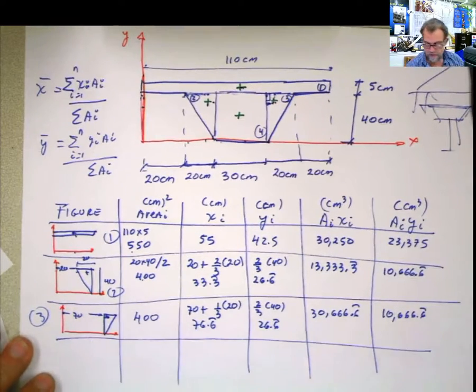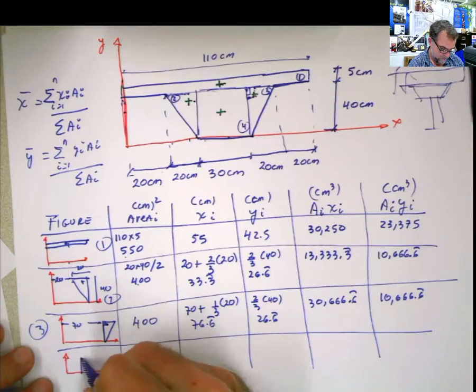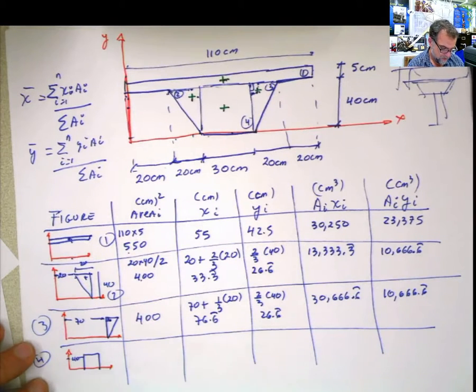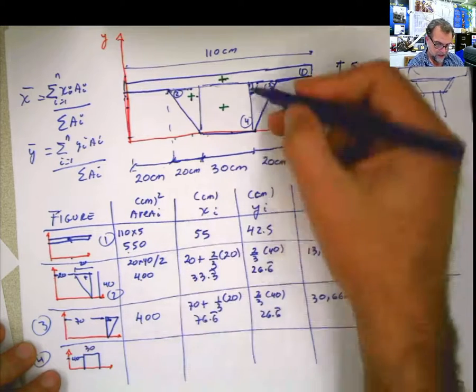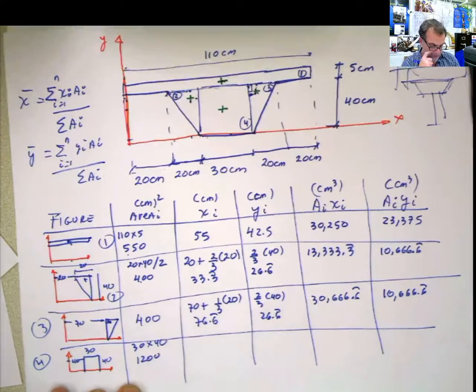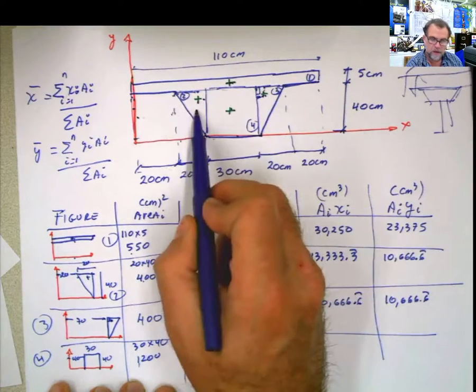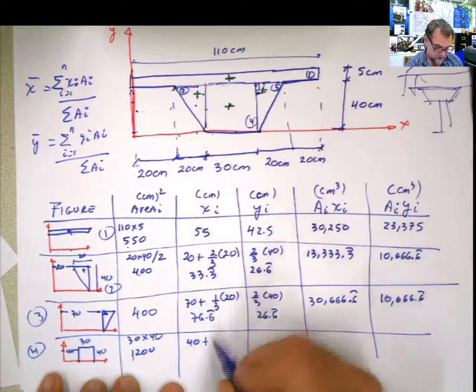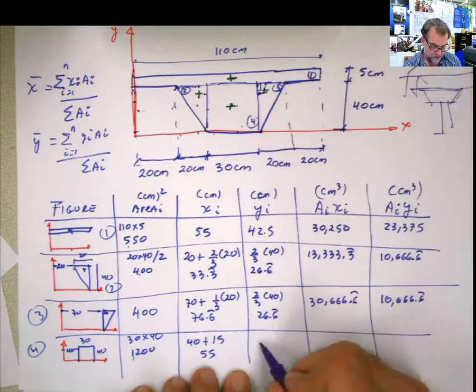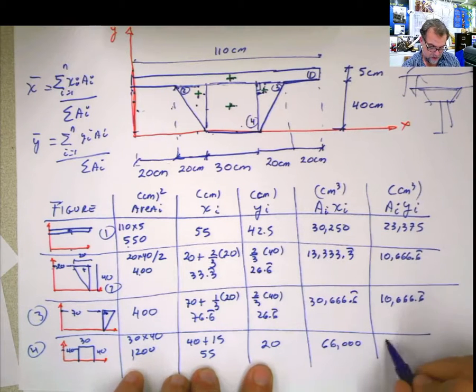Figure 4. Distance from here to here, 40. And the base is 30. And the height is 40. What is the area? 30 times 40, which is 1,200. What is x? The distance from here to there, which is 10. 20, I'm sorry, plus 20, that's 40. Plus half of the base, 15. That's 55. Distance in y, this is 40. Half of 40, 20. 1,200 times 55, 66,000. 1,200 times 20, 24,000.